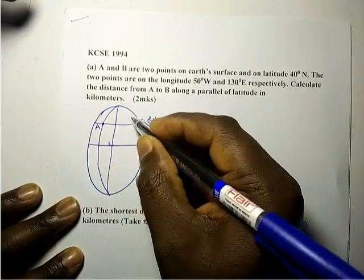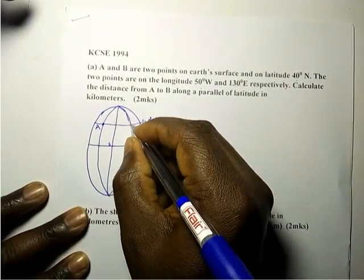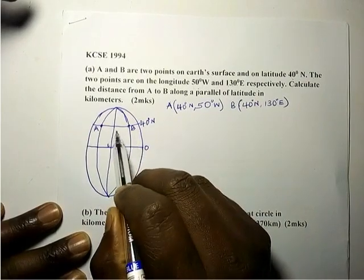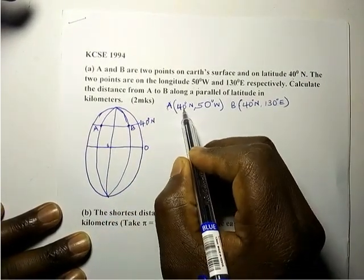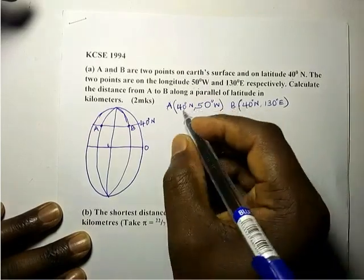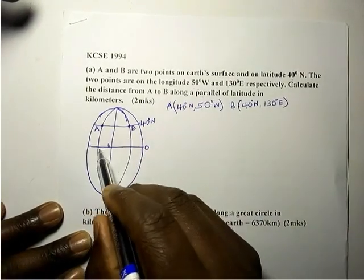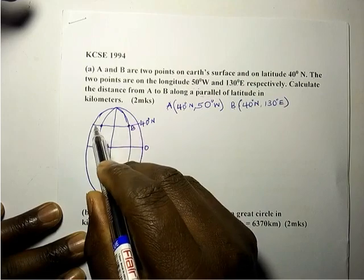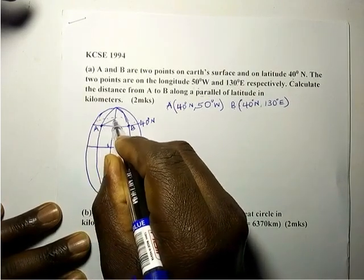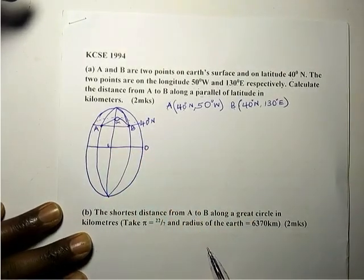130 east could be somewhere here on the other side, so this is point B. Now we have our points A and B. You can clearly see A is on 40 north, 50 west, and B is on 40 north, 130 east. We are calculating the distance along the parallel — this is the equator and it is parallel with this line, so we are calculating the distance along the small circle.